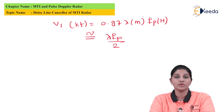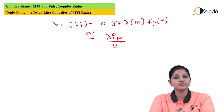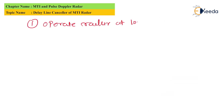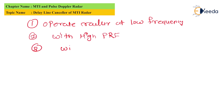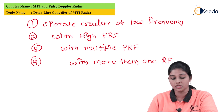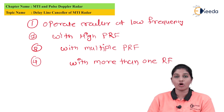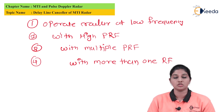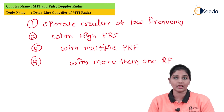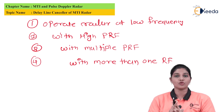The blind speed of the target is a major and serious issue in MTI radar because the target may go undetected even when it is actually present. The blind speed problem can be reduced or eliminated by: operating the radar at low frequency (longer wavelength), operating with high pulse repetition frequency, using multiple pulse repetition frequencies, or using more than one radio frequency.